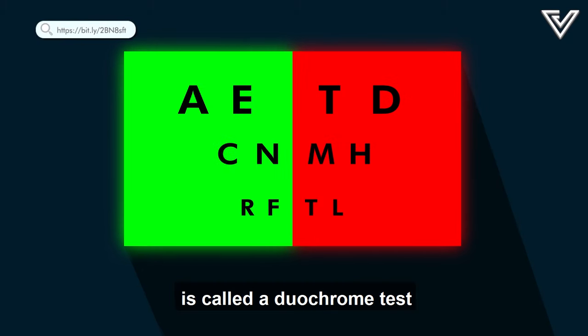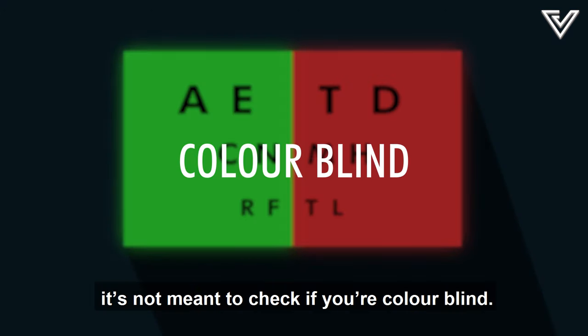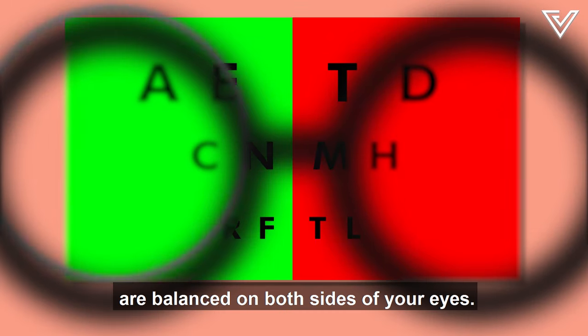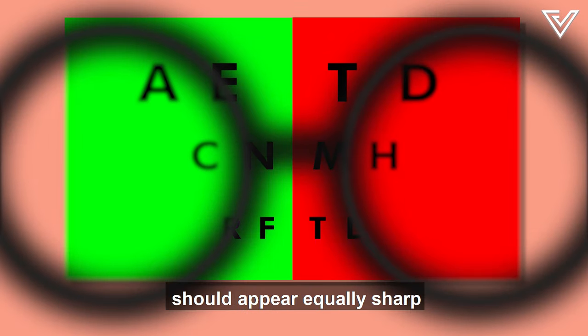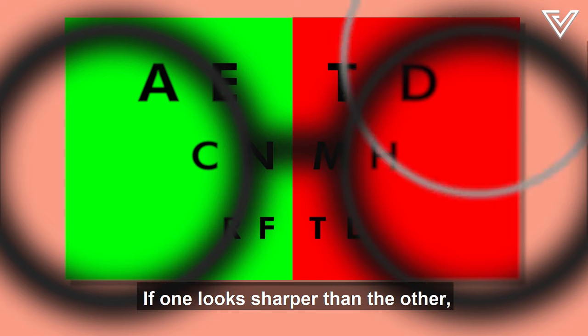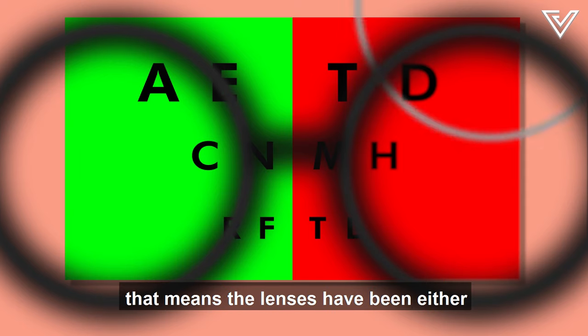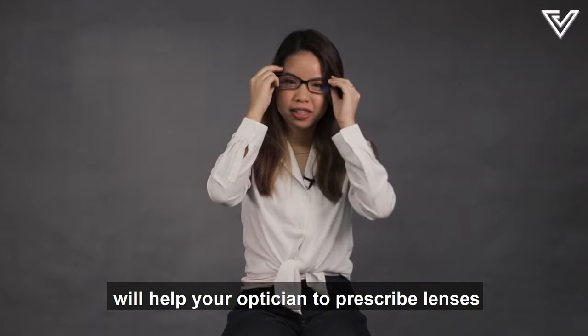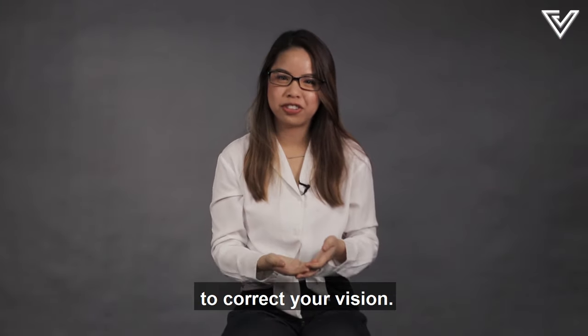Another step, it's called a dual-chrome test. And no, it's not meant to check if you're colour blind. It's to check if the lenses you were given are balanced on both sides of your eyes. Both red and green should appear equally sharp. If one looks sharper than the other, that means that the lenses have been either over or under corrected. All these tests will help your optician to prescribe lenses with the most accurate power to correct your vision.